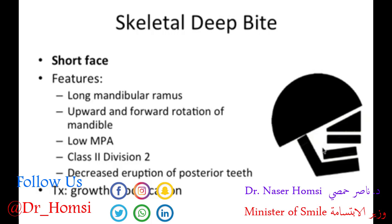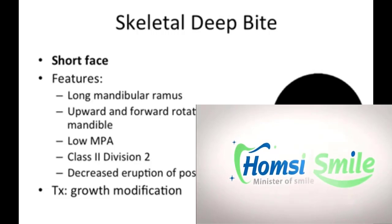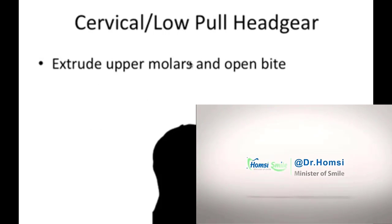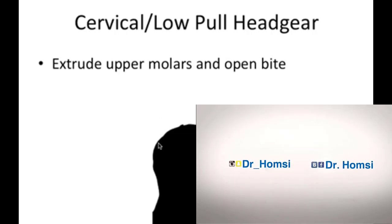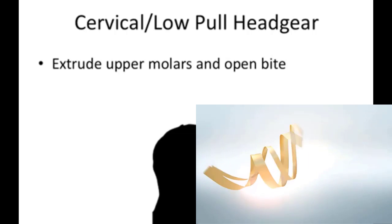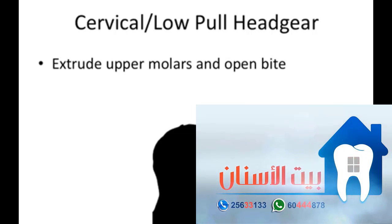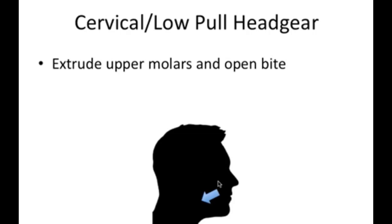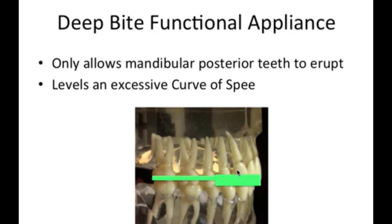We have decreased eruption of posterior teeth, which requires growth modification. The opposite of high pull headgear is low pull headgear — instead of pulling up and back, we pull down and back — to extrude the upper molars and open the bite. This actually has a decent prognosis. For the bite block approach, a deep bite functional appliance would block the anteriors and maxillary posteriors, allowing only the mandibular posteriors to erupt, leveling an excessive curve of Spee as face height increases during treatment.